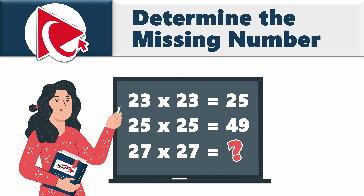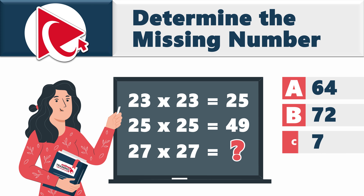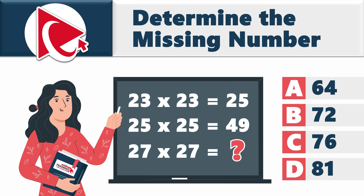The result of 27 by 27, you need to select out of four possible choices: Choice A — 64; Choice B — 72; Choice C — 76; and last but not least, Choice D — 81.